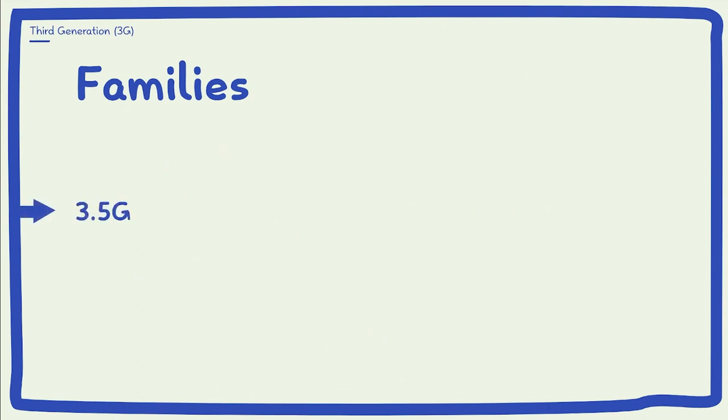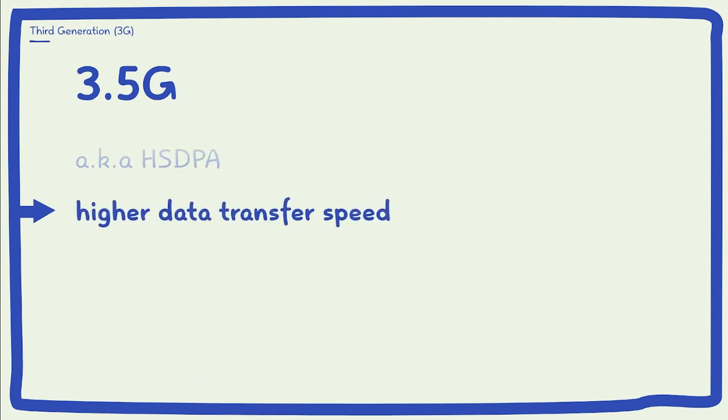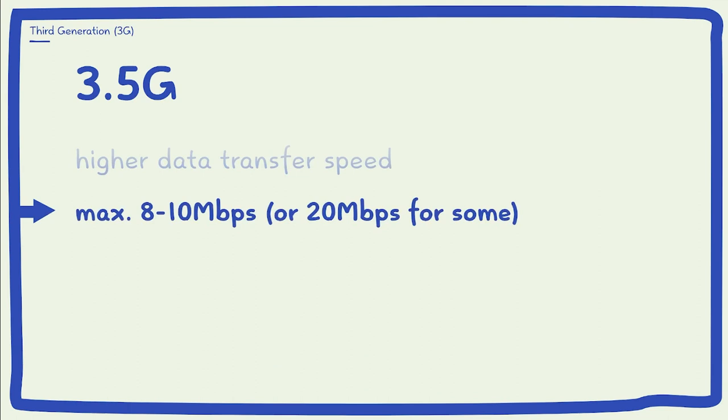3.5G technologies are known for High Speed Downlink Packet Access (HSDPA), which provides a smooth upgrade path for 3G networks. This feature allows for higher data transfer speeds with a maximum of 8 to 10 Mbps and up to 20 Mbps for some systems.